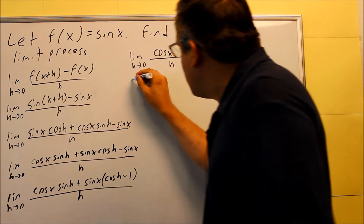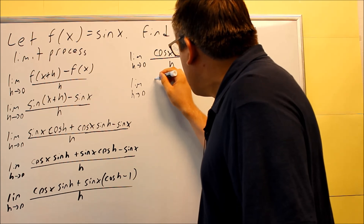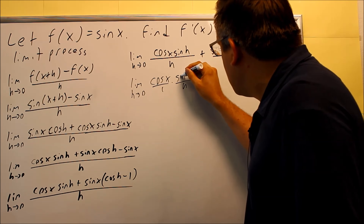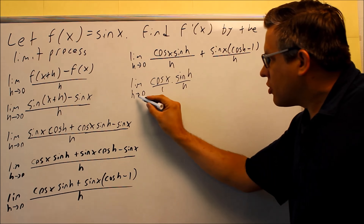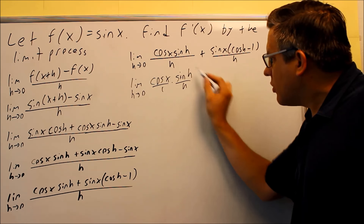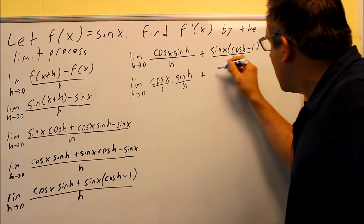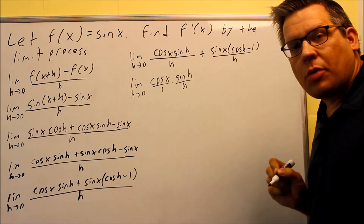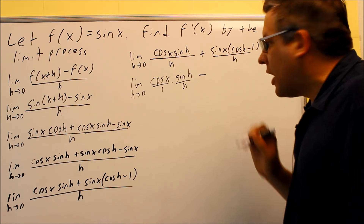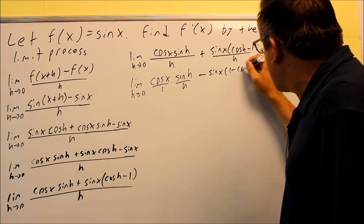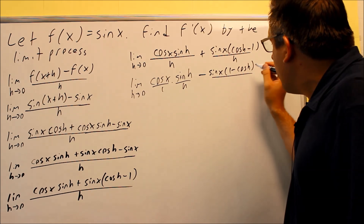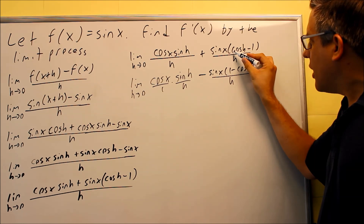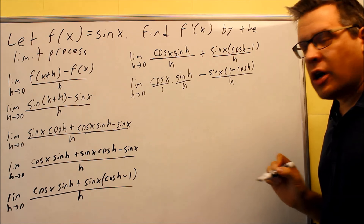I'll break each fraction up further. The first becomes cosine x over 1 times sine h over h — I'm looking for that special limit as h goes to 0 of sine h over h, which turns into 1. For the other one, I need to switch the order around because the limit only works for 1 minus cosine h over h. So I'll put a minus sign and write sine x times the quantity 1 minus cosine h over h. Factoring out a minus sign switches the order, which is why I make that a minus.